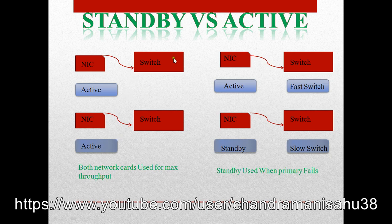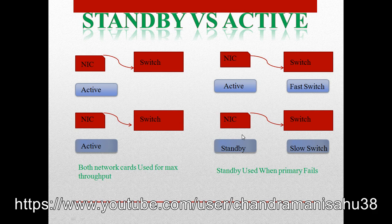In the active/active scenario, there are two NIC cards. If one NIC card goes down, traffic moves to the second active NIC — this is essentially failover and load balancing, similar to clustering, so connectivity is never lost. In the active/standby scenario, if the active NIC goes down, it fails over to the standby NIC. The key difference is that active mode gives maximum throughput, while standby only works when the primary fails.